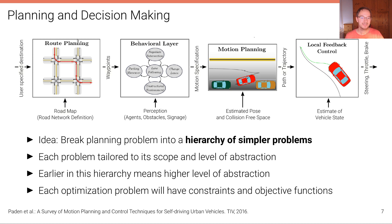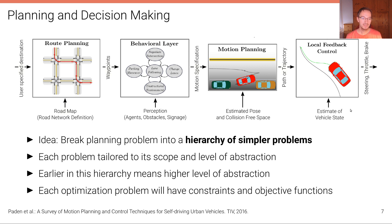Earlier in this hierarchy — meaning at a higher level of abstraction — is the route planning stage, where we find the approximate route from the current location to the destination, for example through an HD map. At the lower level, in the motion planning stage, we plan at a much finer granularity the trajectory or path of the vehicle to perform a certain maneuver, and that trajectory is then fed into the local feedback control. Each of these optimization problems will have its unique constraints and objective functions.